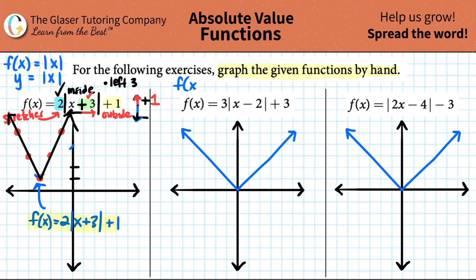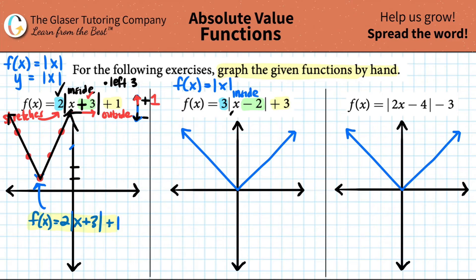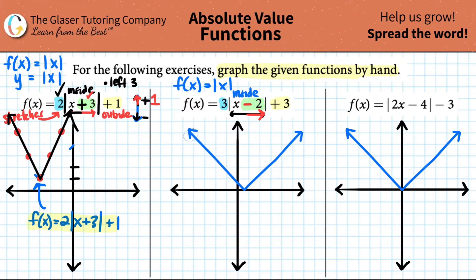We already have our base graph f(x) = |x|. For the second function, there are three things different from the original: a times-three out front, a minus two inside, and a plus three outside. Always start inside first. A minus two inside is a horizontal shift — minuses go to the right. So I take my graph and move it to the right two units: one, two. That part is done.